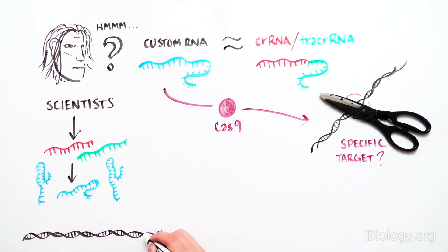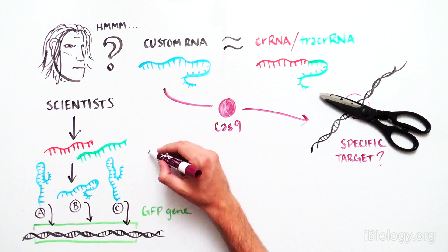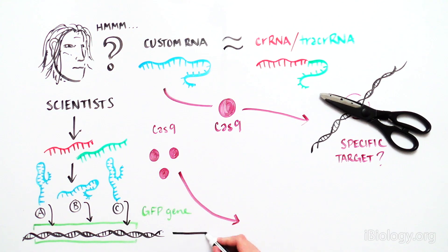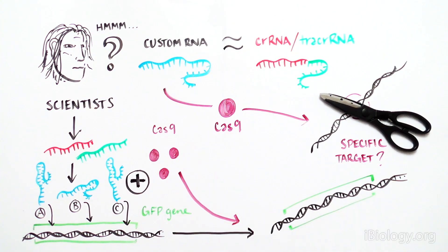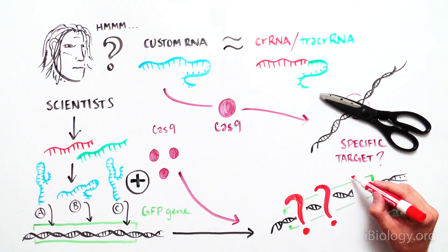In this case, they engineered the RNAs to target specific sequences of the gene encoding the green fluorescent protein, GFP. They added the engineered RNA molecules to the GFP DNA sequence along with the Cas9 protein and asked whether Cas9 would cut GFP DNA at specific sequences.